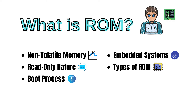Erasable Programmable ROM, called EPROM, allows users to erase and reprogram the data using ultraviolet light. Once programmed, it can be erased and reprogrammed multiple times. Electrically Erasable Programmable ROM, called EEPROM, is similar to EPROM, but it can be erased and reprogrammed electrically, making it more convenient for users.